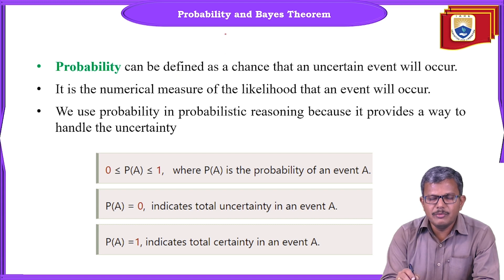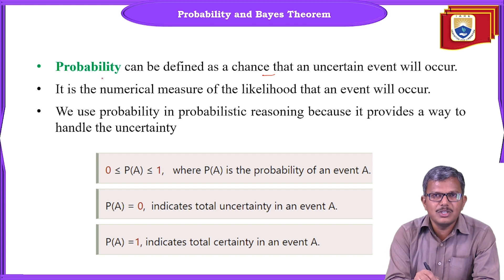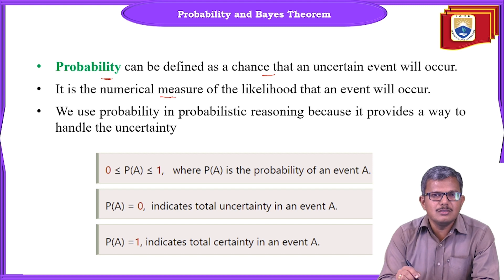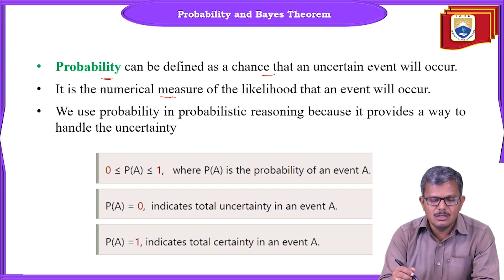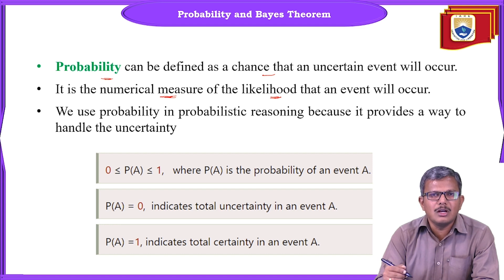In simple words, combining probability and Bayes theorem: probability can be defined as a chance that an uncertain event will occur — how much possibility or probability is there for a particular event to occur. That kind of representation we explain using the word probability, shown by a numerical measure — the likelihood of a particular event, meaning how much chance there is for that event to occur.